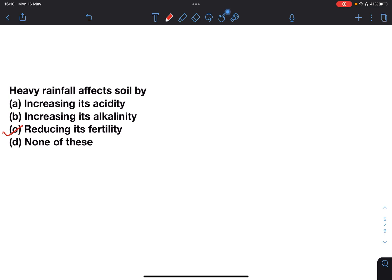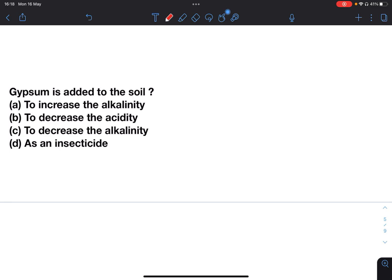Next: Gypsum is added to the soil to increase the alkalinity, to decrease the acidity, to decrease the alkalinity, or as an insecticide. Answer will be C, to decrease the alkalinity. Gypsum helps in retaining the water for a longer period of time. In this way it increases the fertility of the soil.